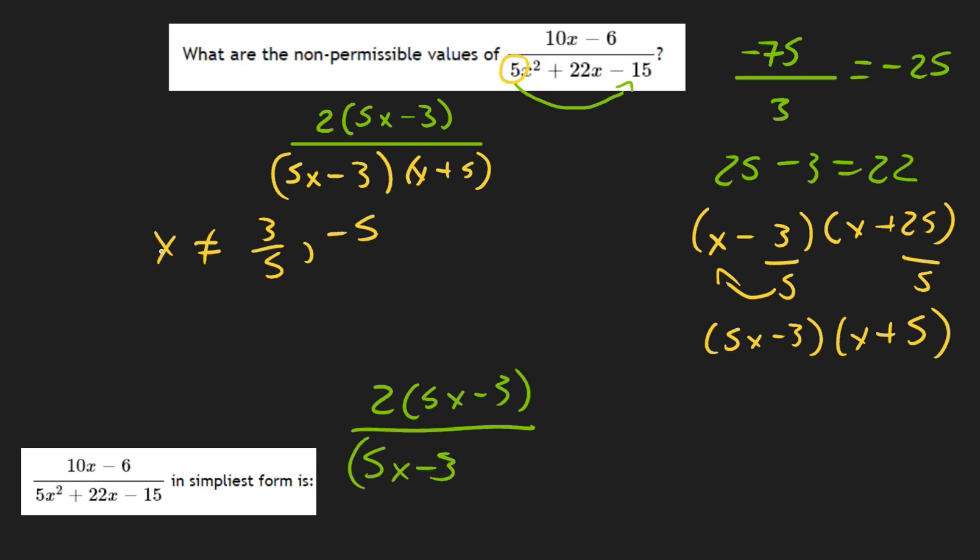5x minus 3 right here, x plus 5. We can cancel this out because it's the same. We will be left with 2 over x plus 5.